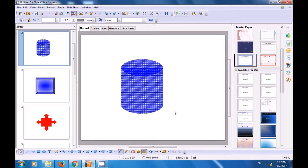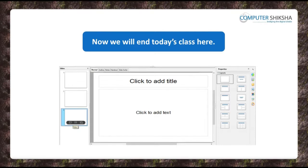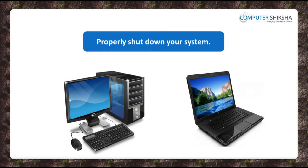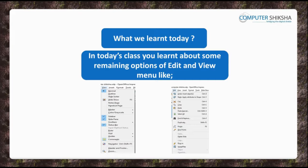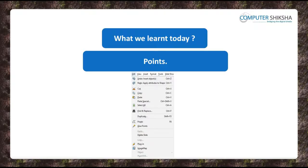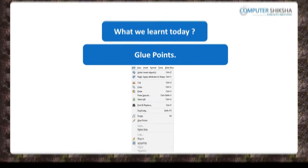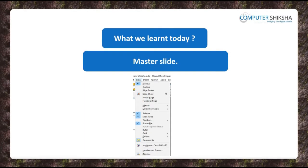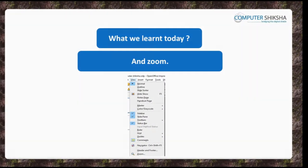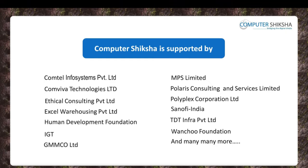Since today's class ends here, all of you close your Impress files and properly shut down your computers. In today's class, you all learned about the remaining options of the Edit and View Menus like Points, Glue Points, etc., which are all options of the Edit Menu. The options from the View Menu that you learned about were Master Slide, Color/Grayscale, Comments, Navigator, and Zoom. Computer Shiksha. Thank you.